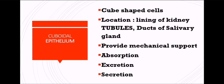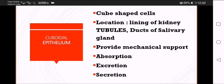Cuboidal epithelium has cube-shaped cells and is present in the lining of kidney tubules — proximal convoluted tubule and distal convoluted tubule. You will learn more about PCT and DCT in grade 12 biology. They are also present in the ducts of the salivary gland, which are located below the chin area, below the cheek, inside the mouth. These ducts secrete saliva. The functions are: providing mechanical support, absorption, excretion, and secretion — including secretion of saliva, secretion of salts, and secretion of ions.